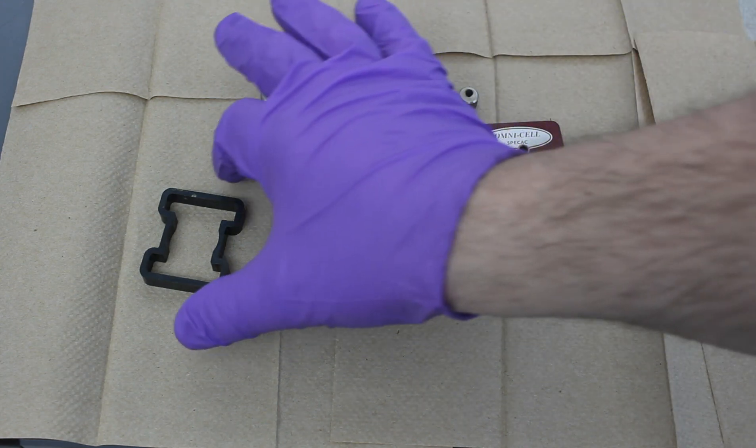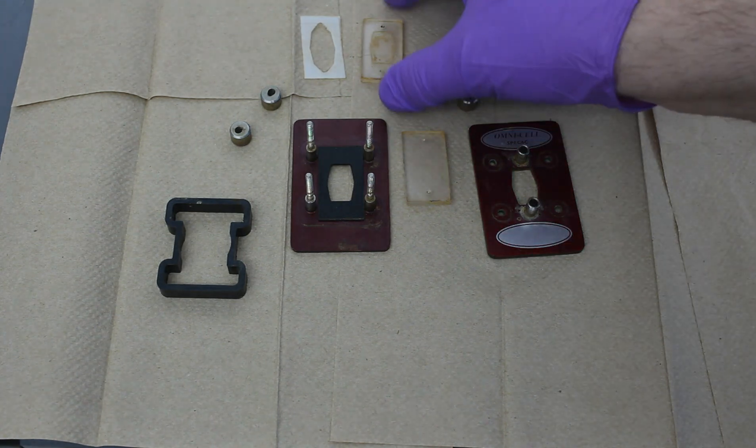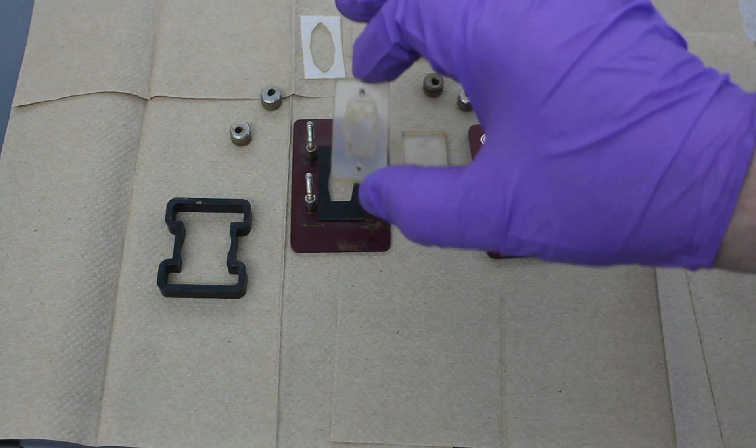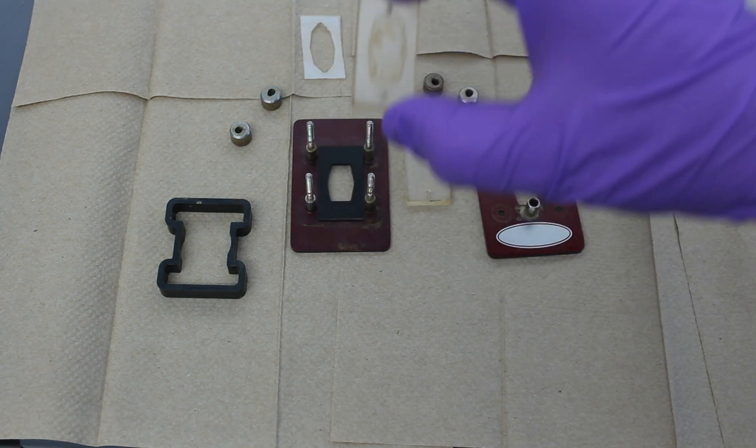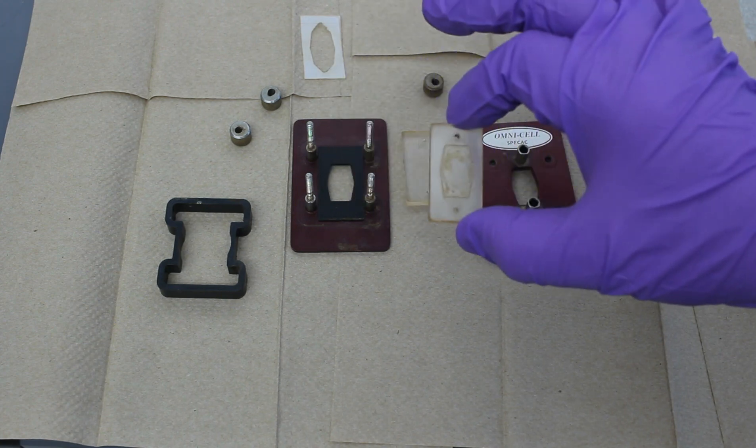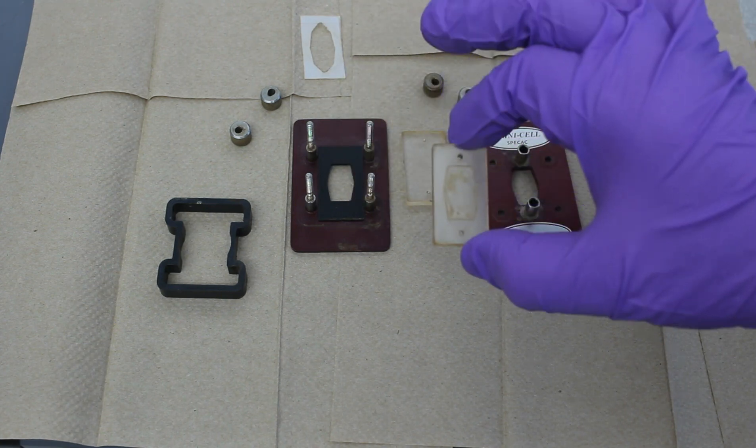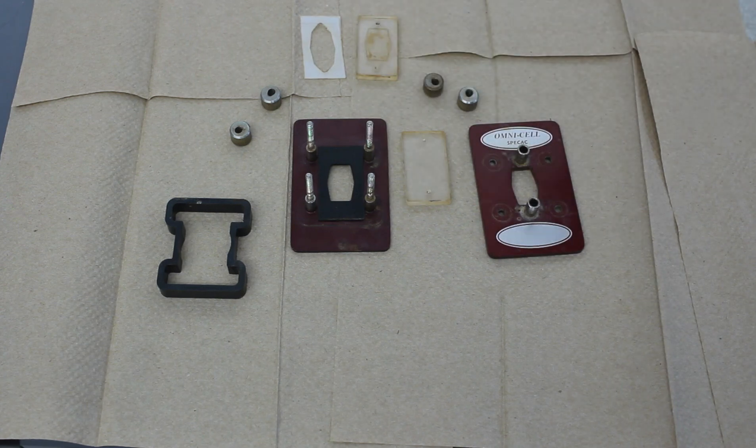So now that we've got this entirely disassembled, what you would do is very carefully wipe down the surfaces. Usually I use a little bit of acetone, maybe a drop of water to wipe away the residue, and then reassemble everything.